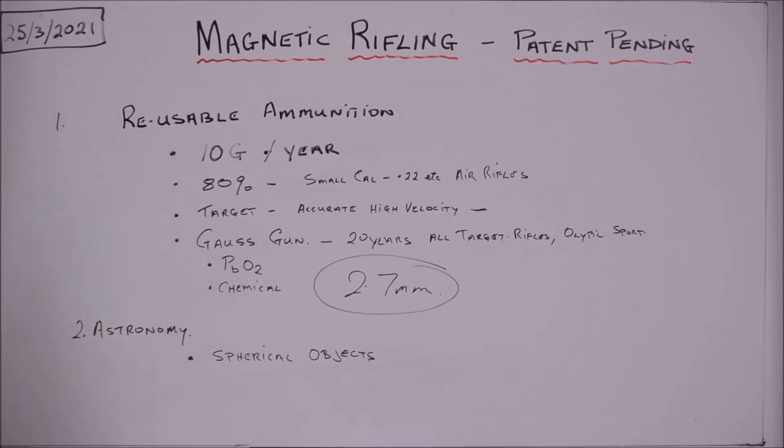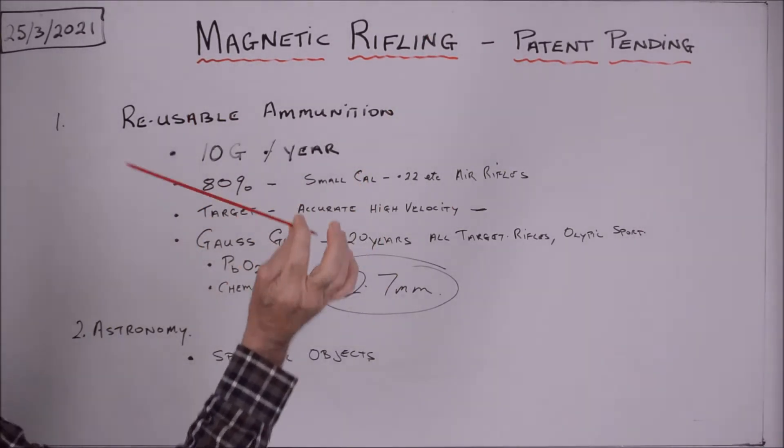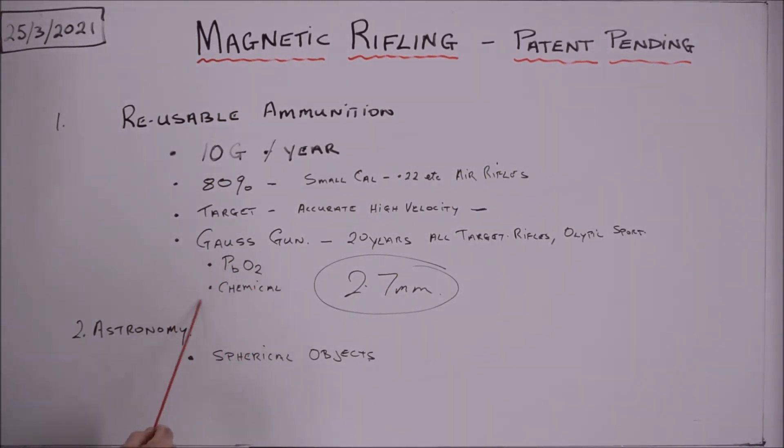Some basic statistics I've come across: there's approximately 10 billion pieces of ammunition used every year. Of which 80% is small caliber 0.22 air rifles etc., rimfire. Which makes sense because you use your small caliber to do your practicing and honing your skills. Now target shooting is focused now becoming more on smaller caliber. More accuracy and high velocity. And they're looking at this 2.7 millimeter zone which is the ideal size for target shooting. If you just want to make a hole in a piece of paper you can achieve this. You don't need huge amounts of energy to lob a projectile 300 meters when it's 0.27 millimeters in size.